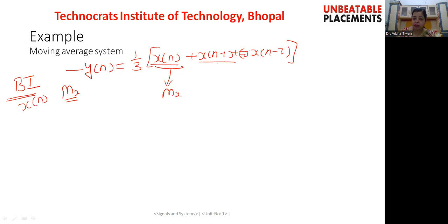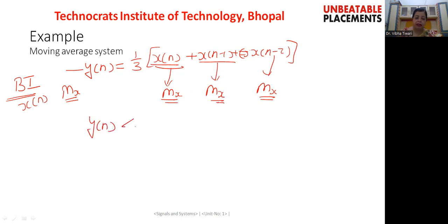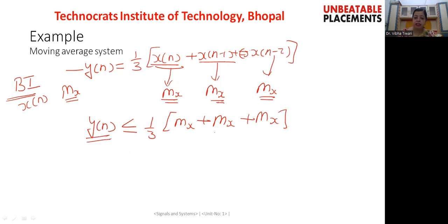The highest possible value for x(n) will be mx. Similarly, x(n-1) will have the highest possible value mx, and x(n-2) will also have the highest possible value mx. Since all three are bounded input signals, they cannot have any value greater than mx. So if we calculate y(n), then y(n) will be less than or equal to one-third of mx plus mx plus mx, which equals one-third of three times mx.